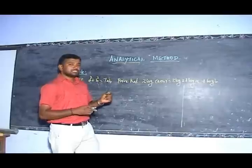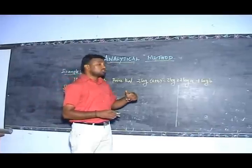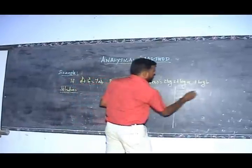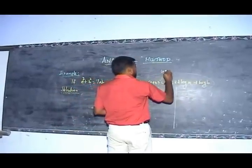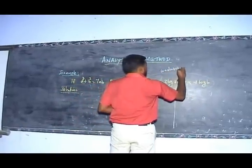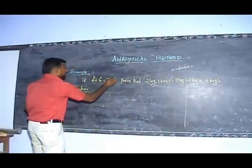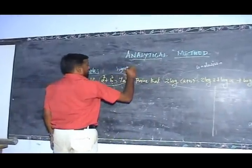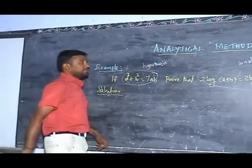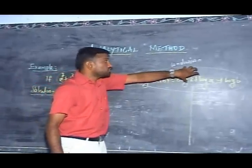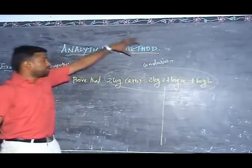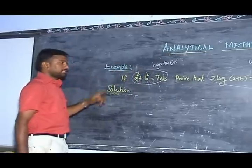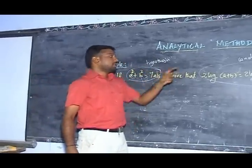The analytic method leads from conclusion to hypothesis. In this problem, the expression to prove is the conclusion part, and the given condition is the hypothesis part. In the analytical method, first we take the conclusion as truth, and then we prove the hypothetical part.